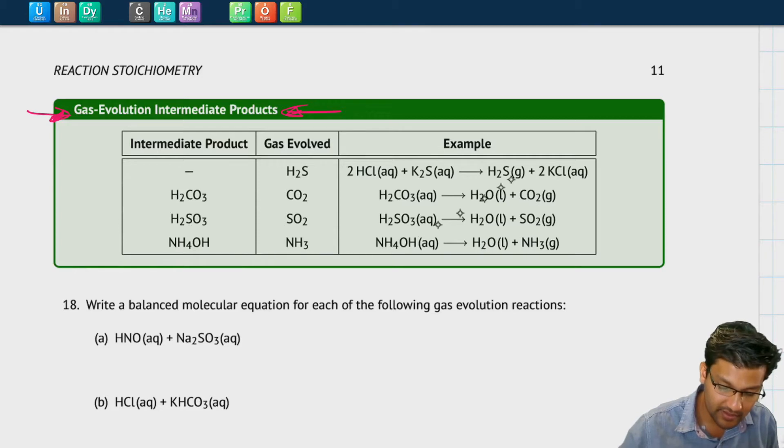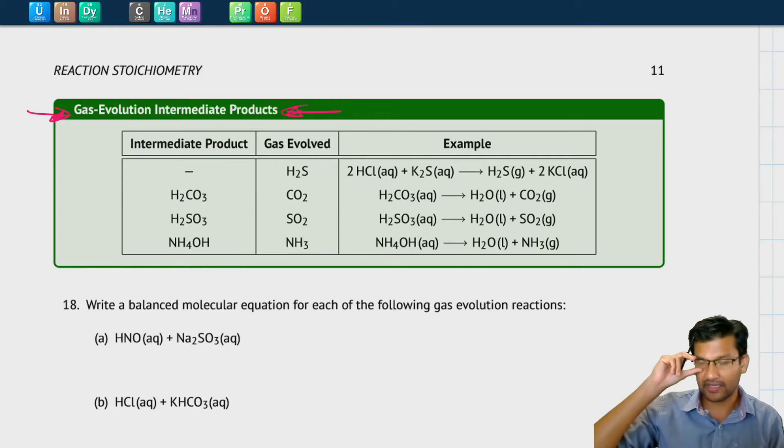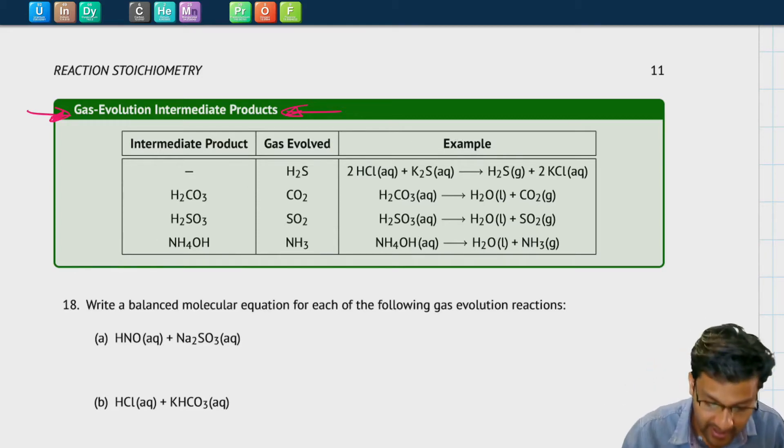This table gives us the various different gases that will happen in a reaction. H2S is simply a gas, it doesn't have to break down from anything, but it forms when acid reacts with sulfide ions.